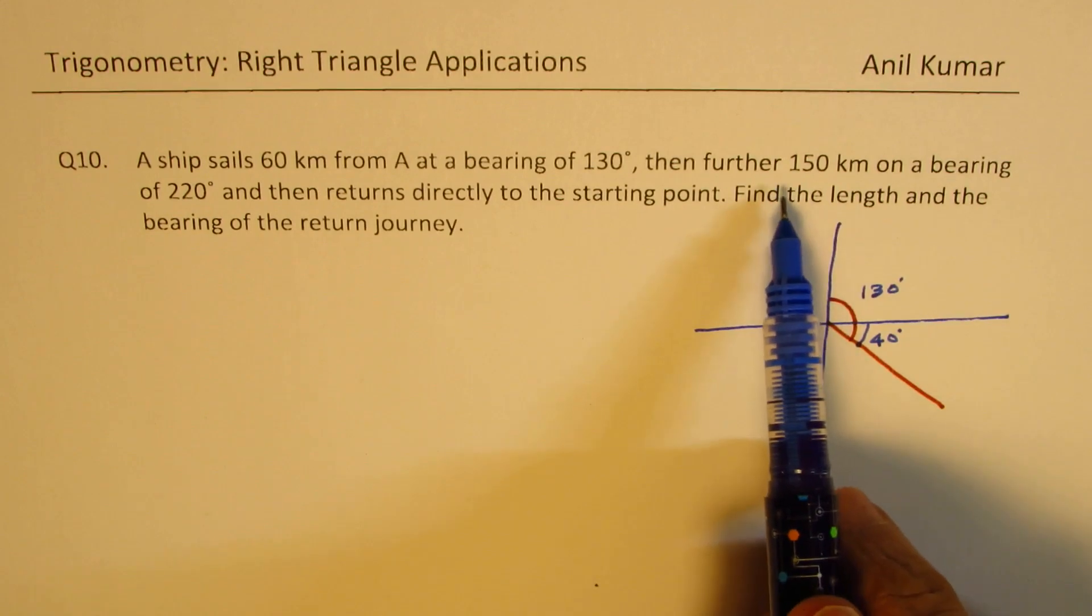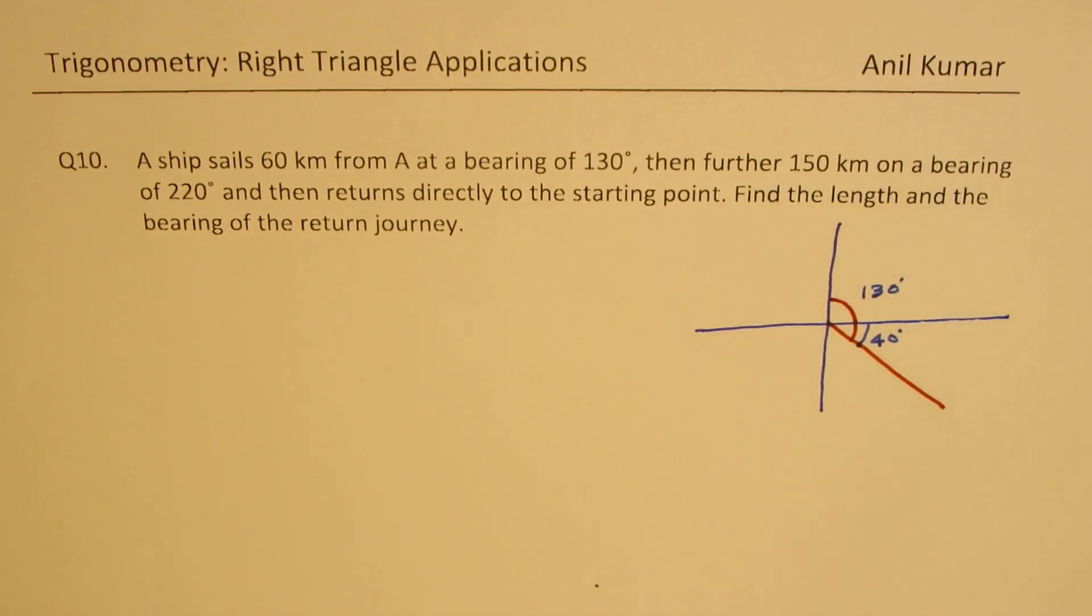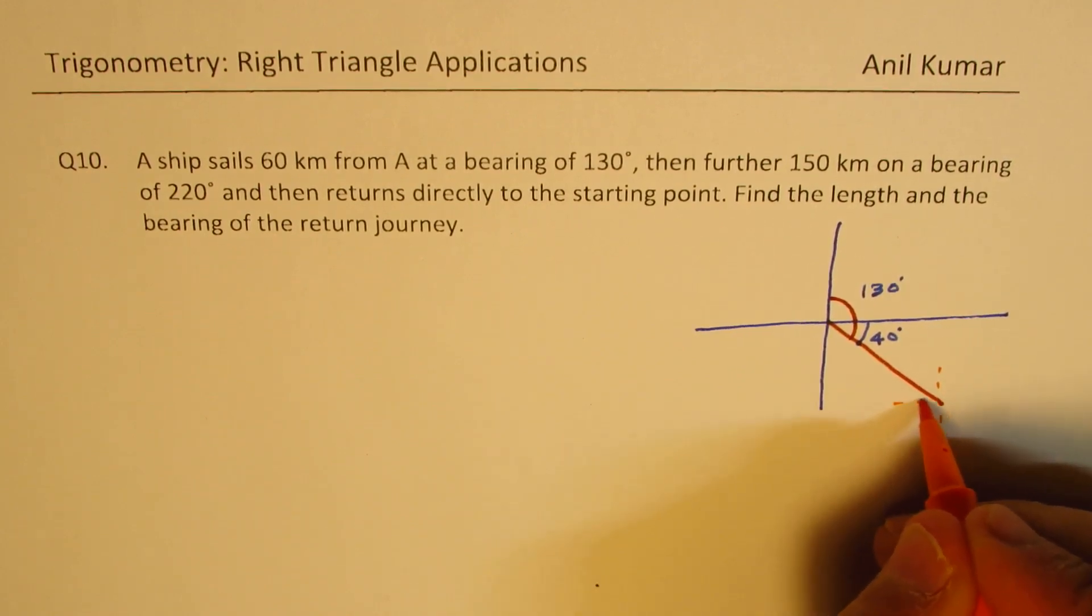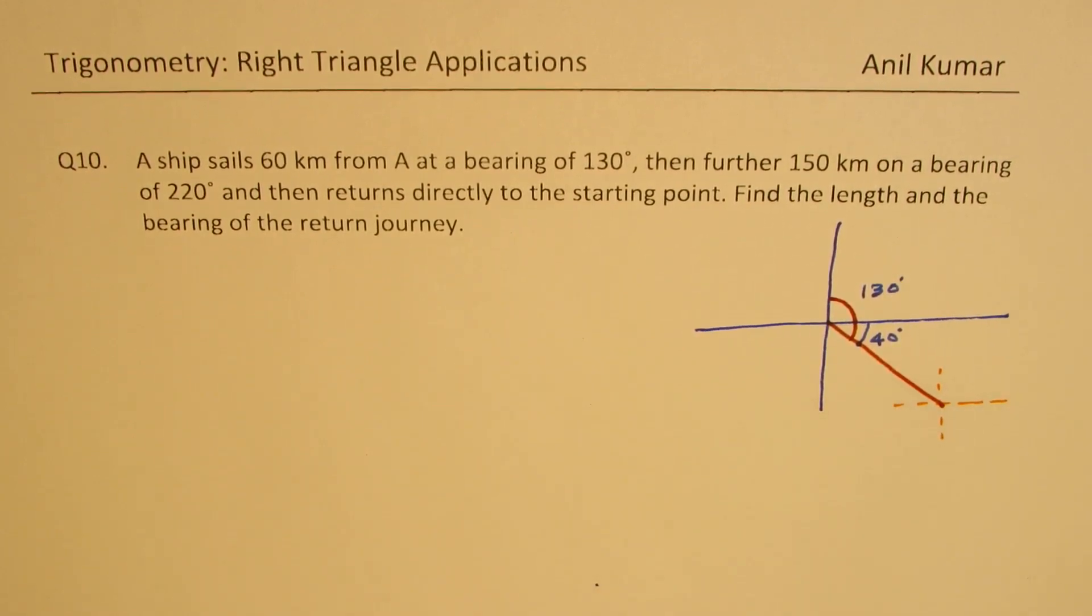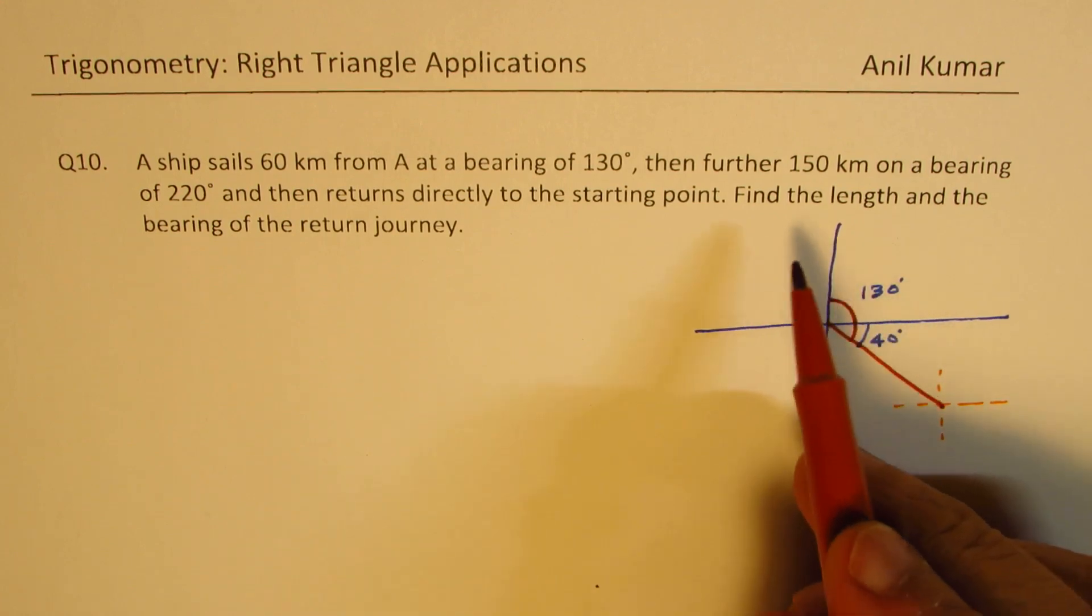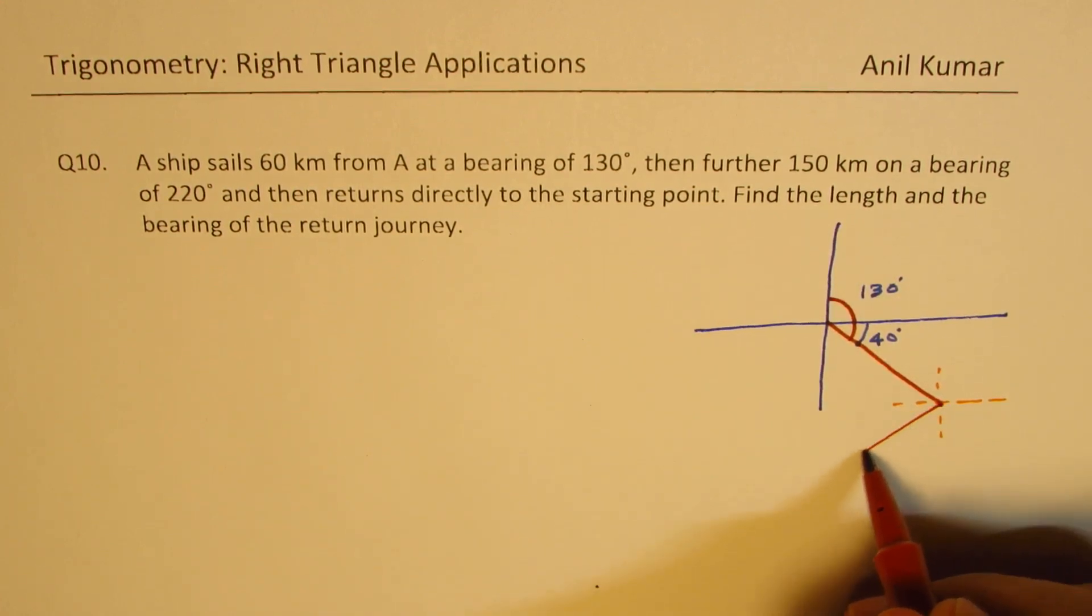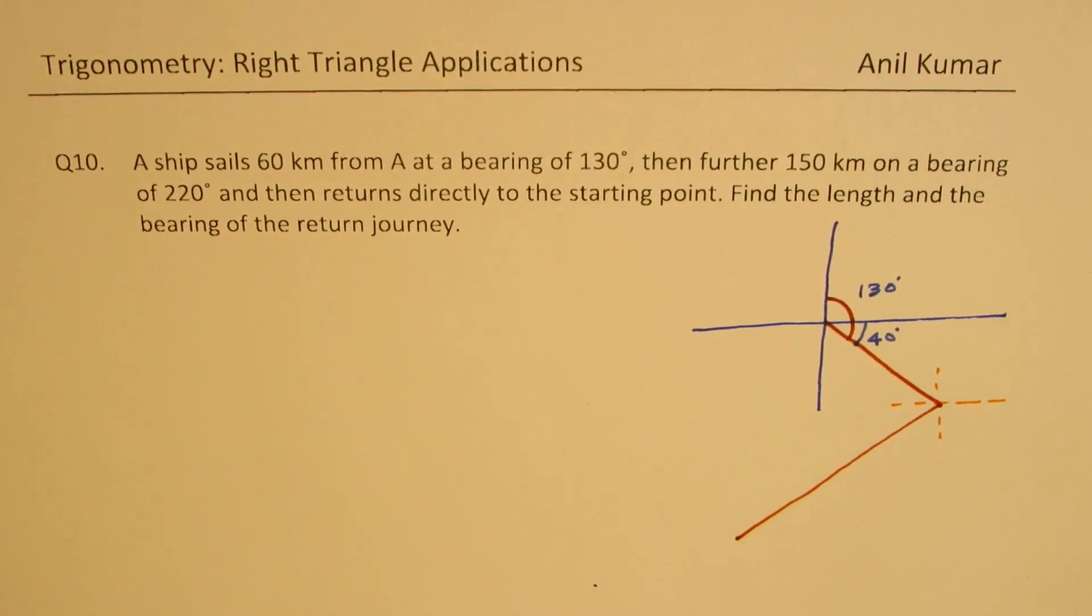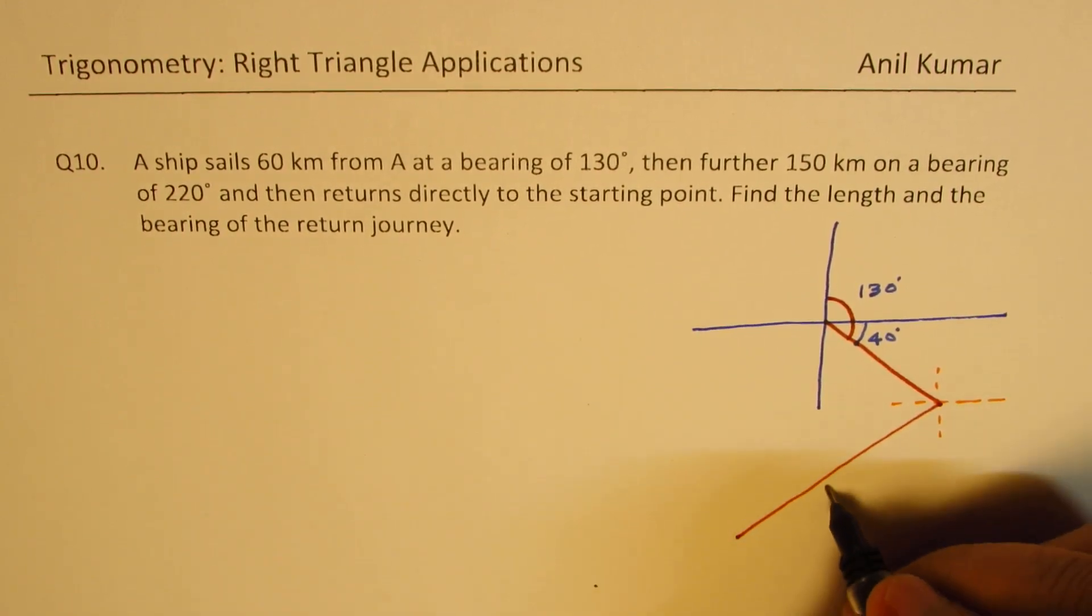Further, 150 km on a bearing of 220. So at this point, we have to go for a bearing of 220. 220 means 50 less than 270, right? So kind of like this and much kind of like this. So that becomes the case. So this is 220 for us.